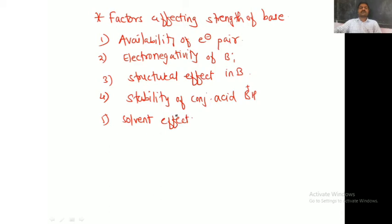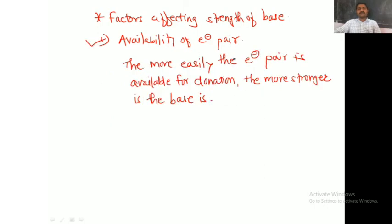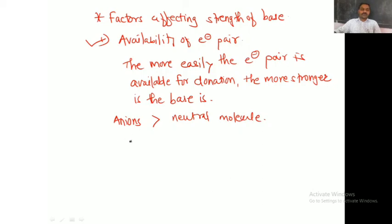The first factor is availability of the electron pair. The more easily the electron pair is available for donation, the stronger the base. Anions are stronger bases than neutral molecules. For example, OH⁻ is more basic than H₂O, and NH₂⁻ is more basic than NH₃.